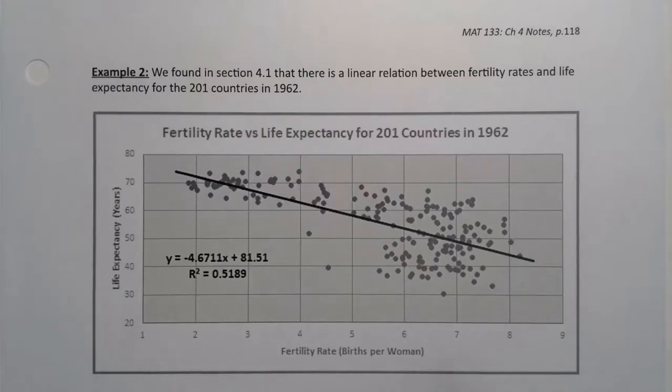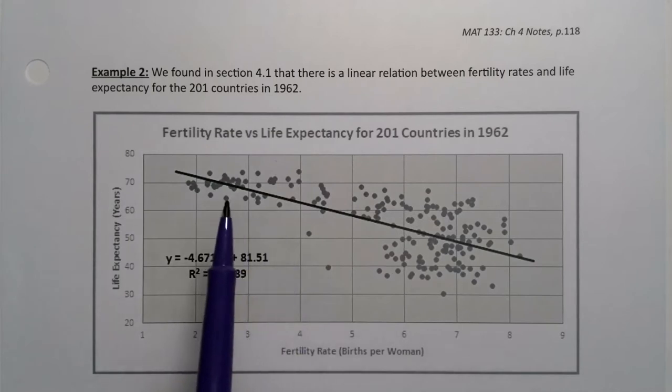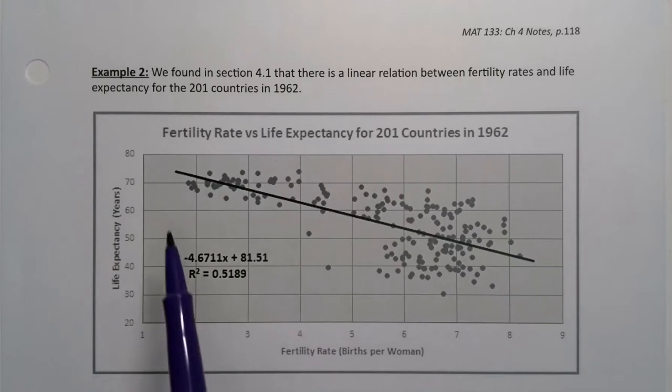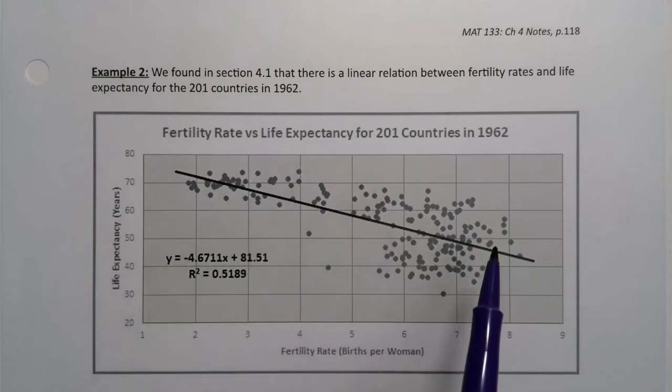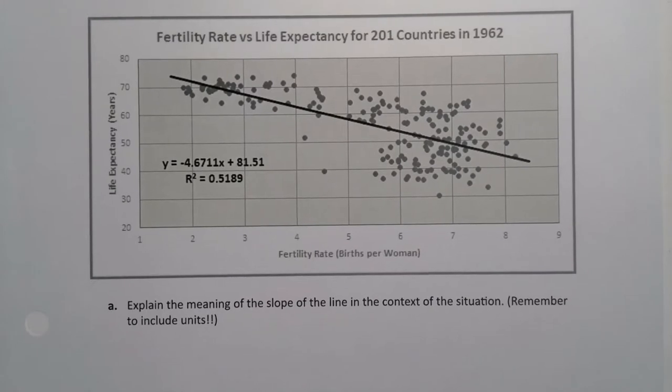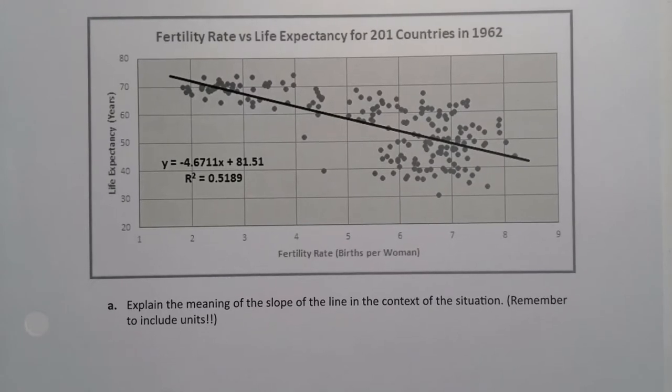We found in Section 4.1 that there is a linear relationship between fertility rates and life expectancy for the 201 countries in 1962. If you recall, this was fertility rate, this was life expectancy, and so on. So we're going to explain the meaning of the slope of the line in the context of this situation.